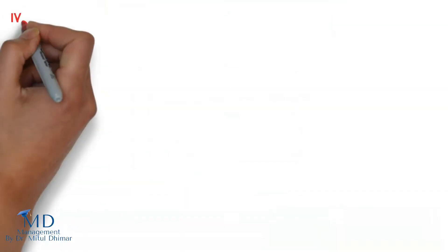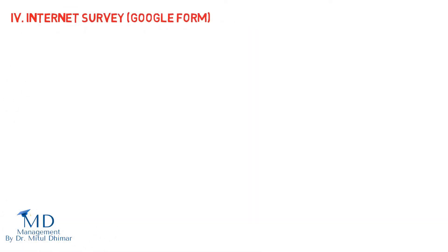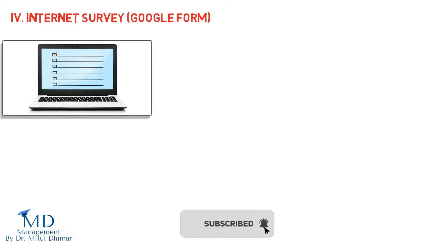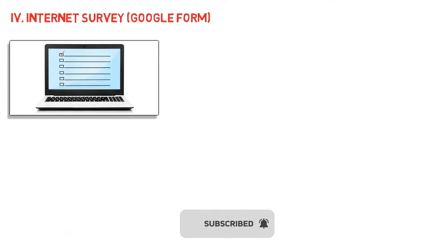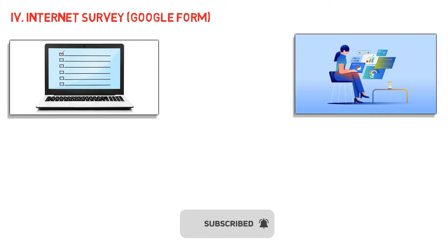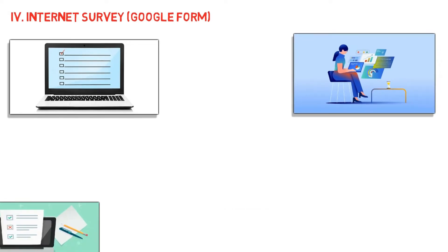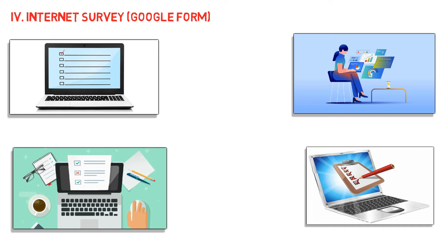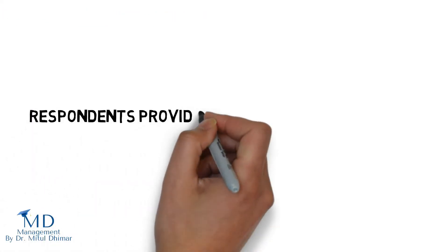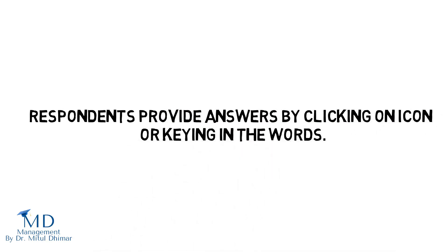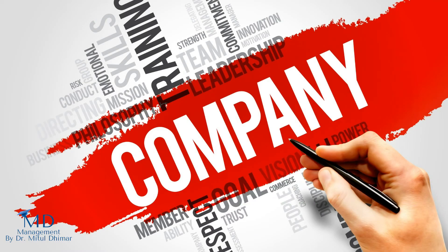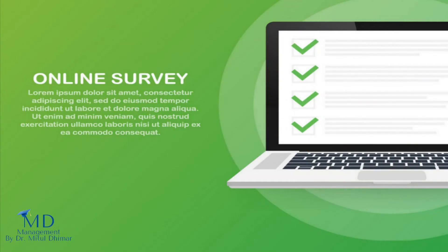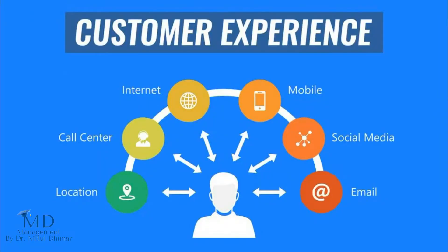Fourth: internet survey, such as Google Forms. In an internet survey, a self-administered questionnaire is posted on a website. Respondents are recruited and asked to visit a particular website and complete the survey. In other cases, people happen to be visiting the website where the survey is posted and provide answers by clicking on an icon or keying in words. For example, any company or organization uses an online survey method for its improvement in marketing or to check customer experience.